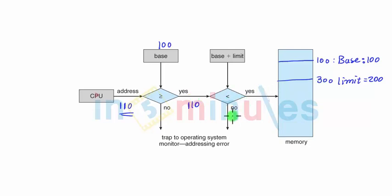Limit is 200. Combining with the limit, we would have starting from 100 plus 200, making it 300 for the final call. 110 is greater than that? No. So 110 would be accessed in terms of the memory. So this is how protection in memory is given. Thanks for watching this video.